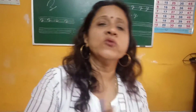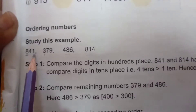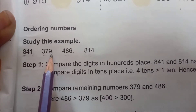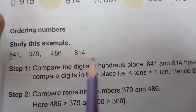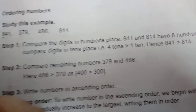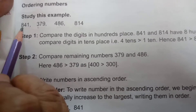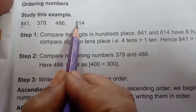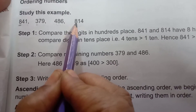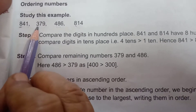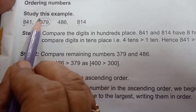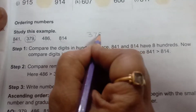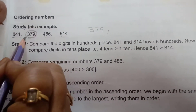Now look at the book — I will teach you how to compare the numbers. Here are 4 numbers: 841, 379, 486, and 814. First of all we have to compare the hundreds place. Here we have 8, 3, 4, and 8. The smallest number is 3, so 379 is the smallest one. We will write 379 first, then remove this number.